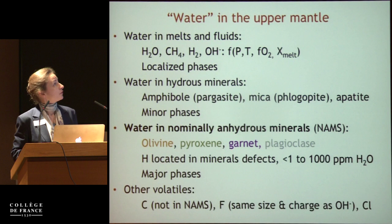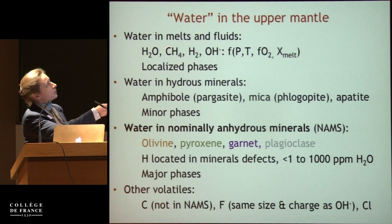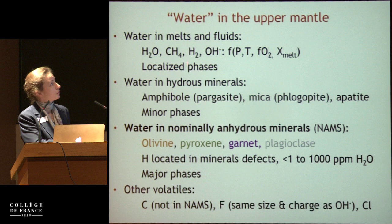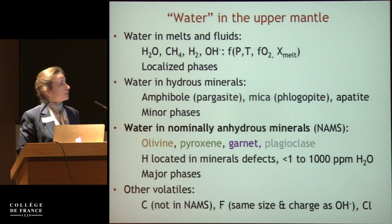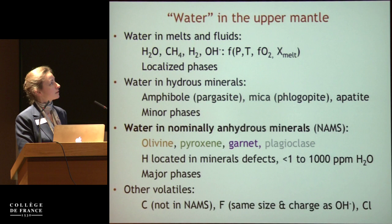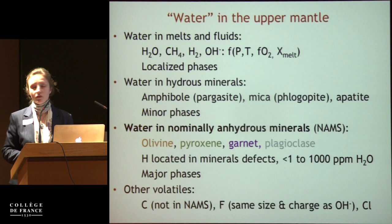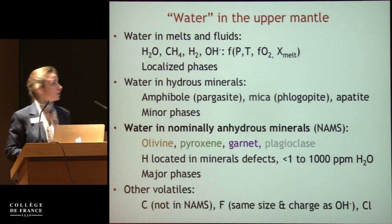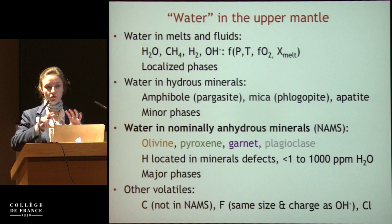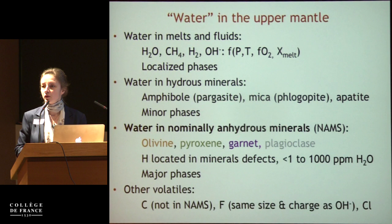Where do you find this water in the mantle? Of course there are melting fluids that circulate in the mantle and water can be dissolved in those, but these are localized phases. Water can also be found in rare hydrous minerals like phlogopites in mantle peridotites. But the main reservoir of water in the upper mantle is actually the nominally anhydrous minerals — the main phases like olivine, pyroxene, and garnet — because if you calculate the total water in the whole upper mantle it would be the equivalent of several oceans in mass.